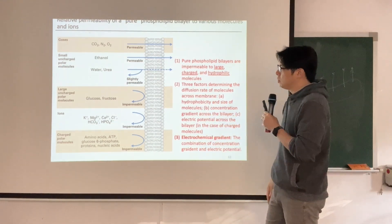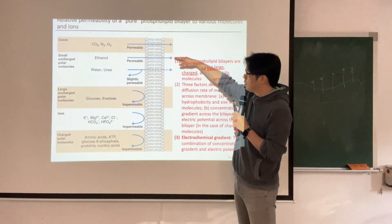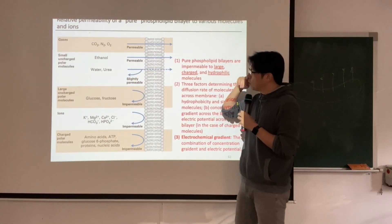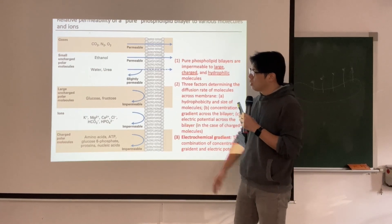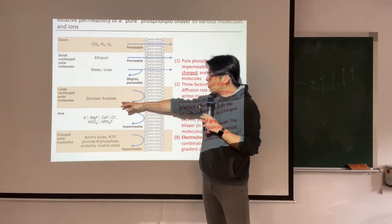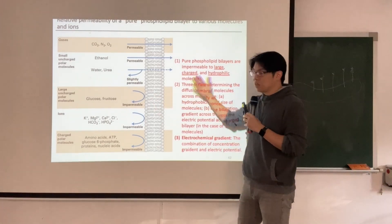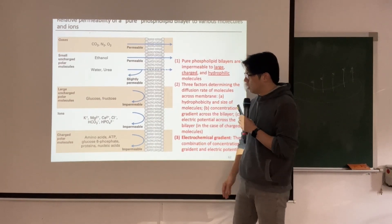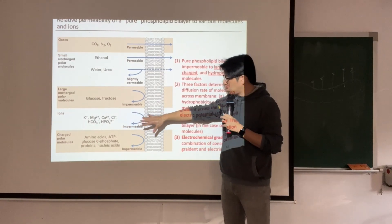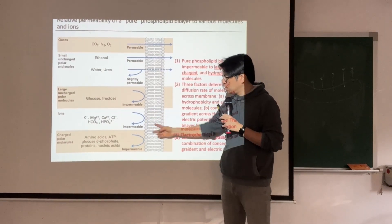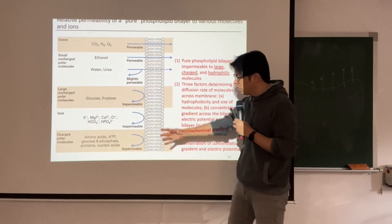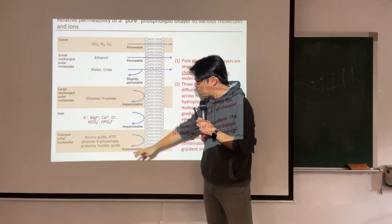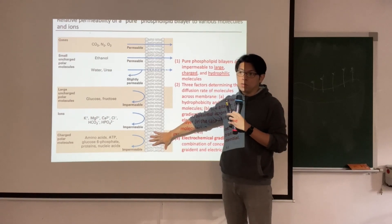Small uncharged polar molecules like ethanol are permeable to membranes. Water and urea are slightly permeable, because water is hydrophilic and not highly permeable. Large uncharged polar molecules like glucose and fructose are impermeable — they cannot penetrate the membrane. Ions with charge cannot penetrate either, because they are hydrophilic and charged — they cannot easily cross the hydrophobic core. Charged polar molecules and large molecules such as amino acids, ATP, glucose-6-phosphate, proteins, and nucleic acids are also not permeable to the membrane.